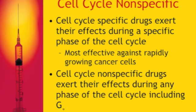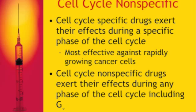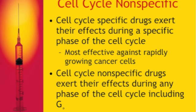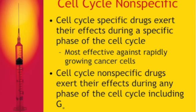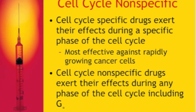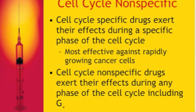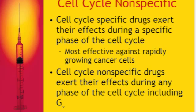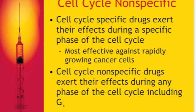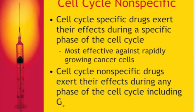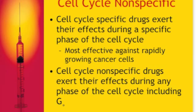Chemotherapy drugs are either cell cycle specific or cell cycle non-specific. Cell cycle specific drugs exert their effects during a specific phase of the cell cycle and are most effective against rapidly growing cancer cells. Cell cycle non-specific drugs exert their effects during any phase of the cell cycle, including the G0 resting phase. The next slide provides a visual to help understand these phases.